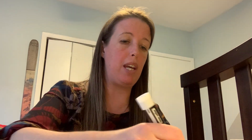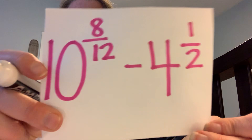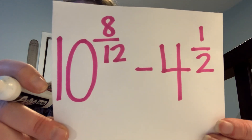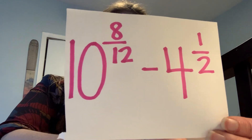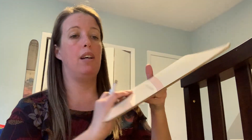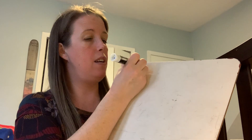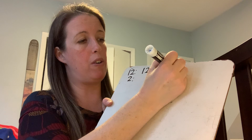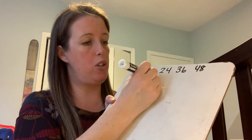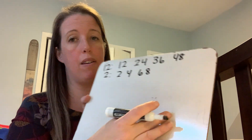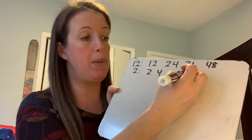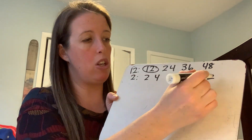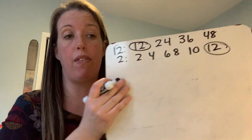Next one: ten and eight-twelfths minus four and a half. I don't have a common denominator, so I'm going to find one by listing multiples. I had twelfths and halves. Multiples of twelve: 12, 24, 36, 48. Multiples of two: 2, 4, 6, 8, 10, 12. There we go — I can use twelfths to find equivalent fractions.